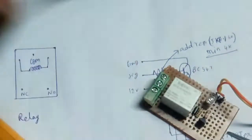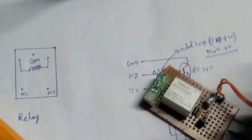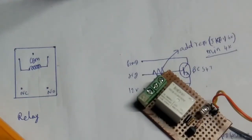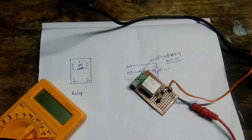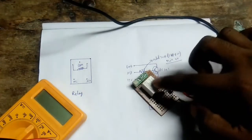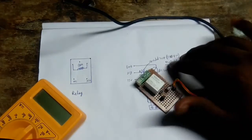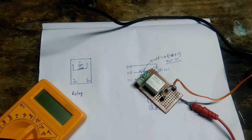We also checked it on 5V. So we have completed the connection for 1 channel. It is very easy — you can make it easier. The rate is 20 to 25 rupees. If you do this yourself, you can make it for around 35 rupees. Thank you for watching.